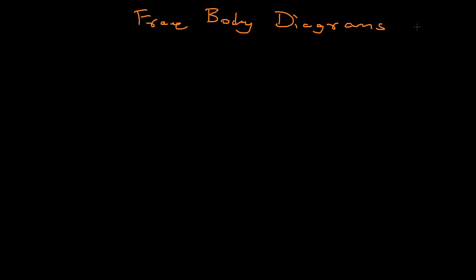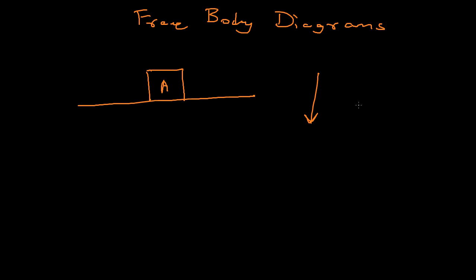Welcome back. Today we'll start with free body diagrams. We'll take a simple example — let's say this is a table, and on top of the table there's a block, block A, resting on the table and not moving in any direction. A free body diagram of anything is just drawing all the forces acting on that particular body at that particular instance.